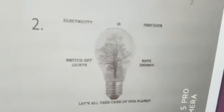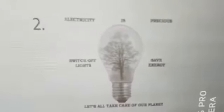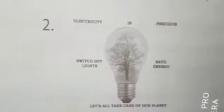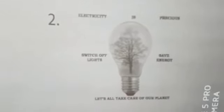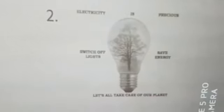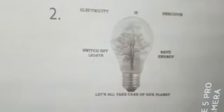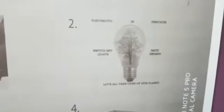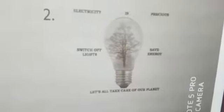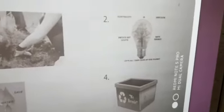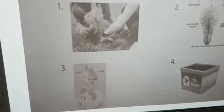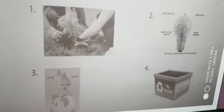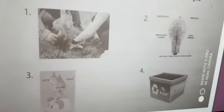Next, number 2 — see the bulb, children. What is this about? Electricity is precious. Switch off lights. Save energy. In your house also, if the fan and light are running unnecessarily, you have to switch off them. We have to save electricity for the future generation. You can give the catchy title 'Save Electricity.'